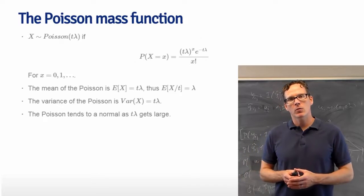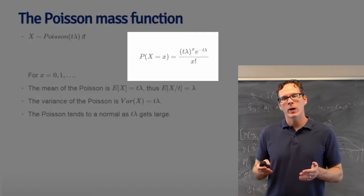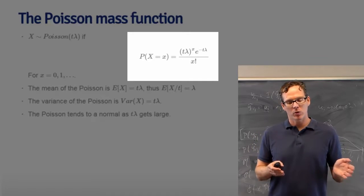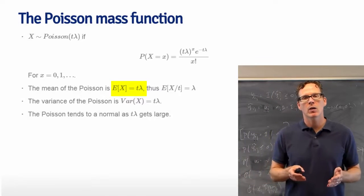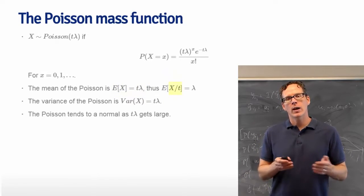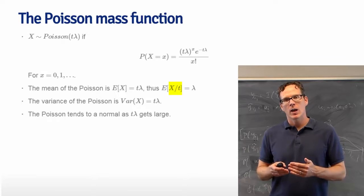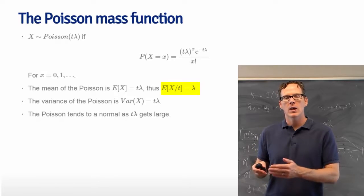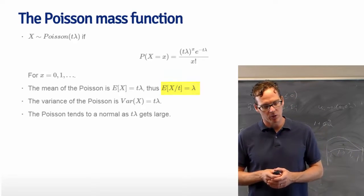I give the Poisson mass function here. The rate of counts per unit time is lambda, whereas t is the total time. If x is Poisson with this mean, then its expected value is t times lambda. So our natural estimate of the rate would be the count over the total time, x over t. And it's nice to know in this case that the expected value of x over t, the expected value of our rate estimate, is exactly lambda, the rate that we would like to estimate. So that's a useful property associated with the Poisson.